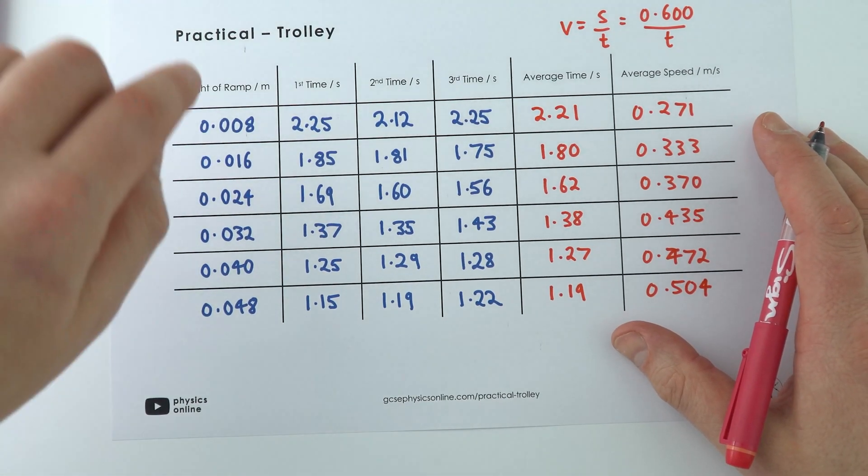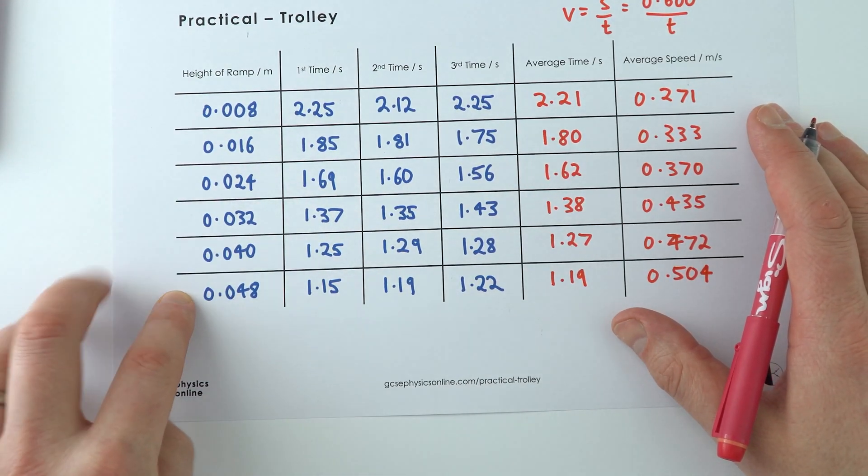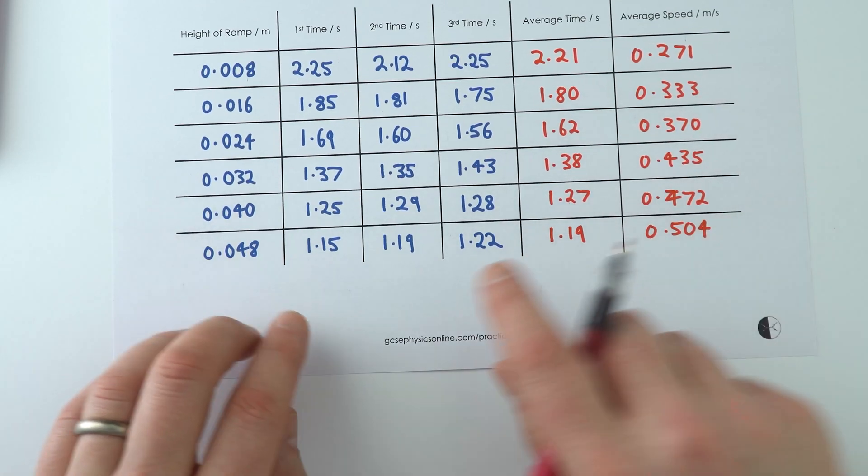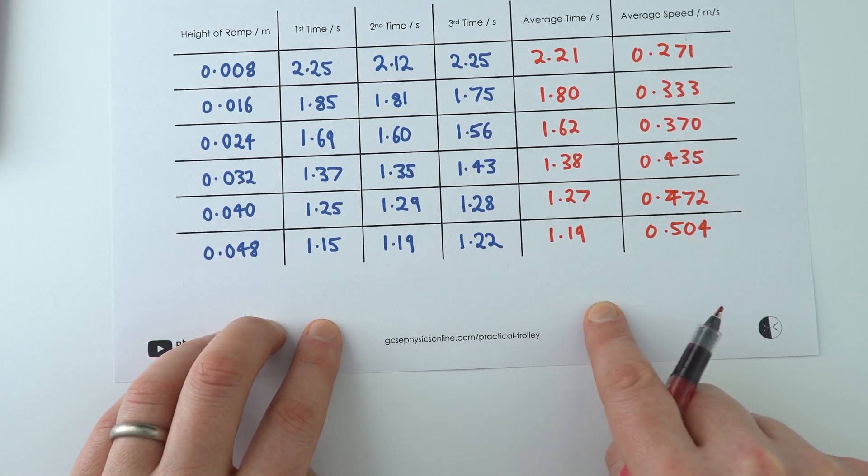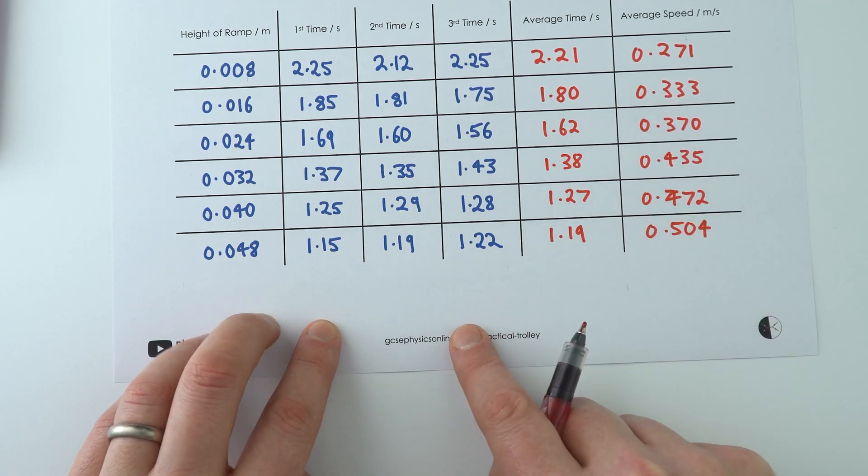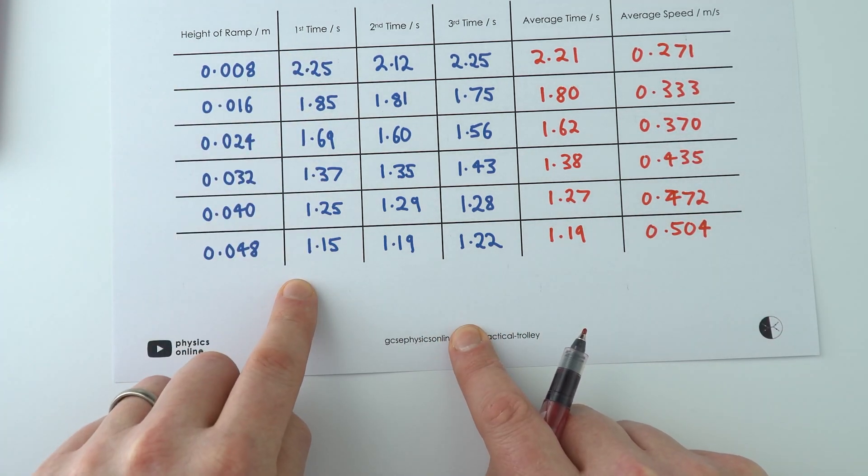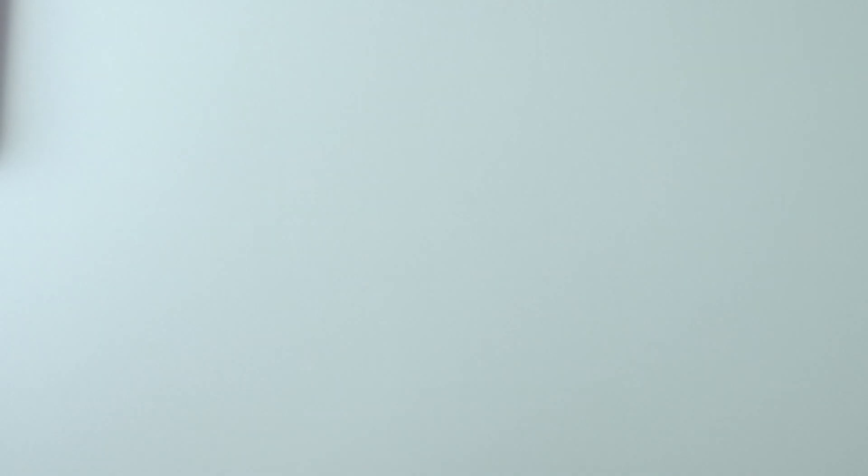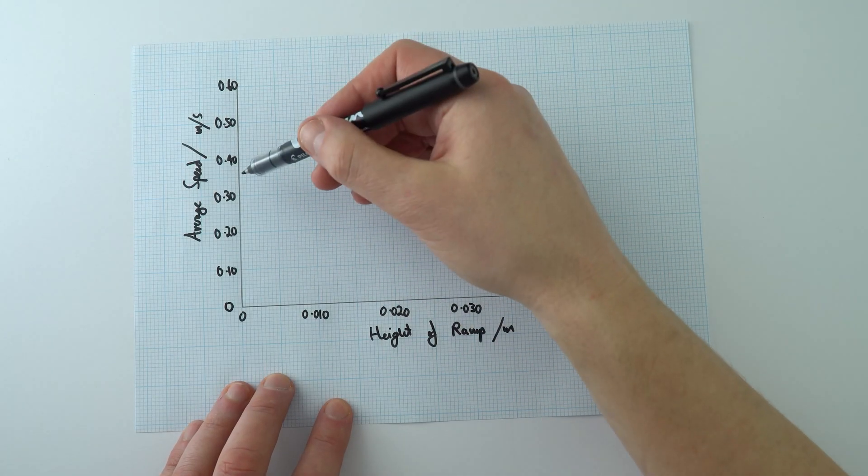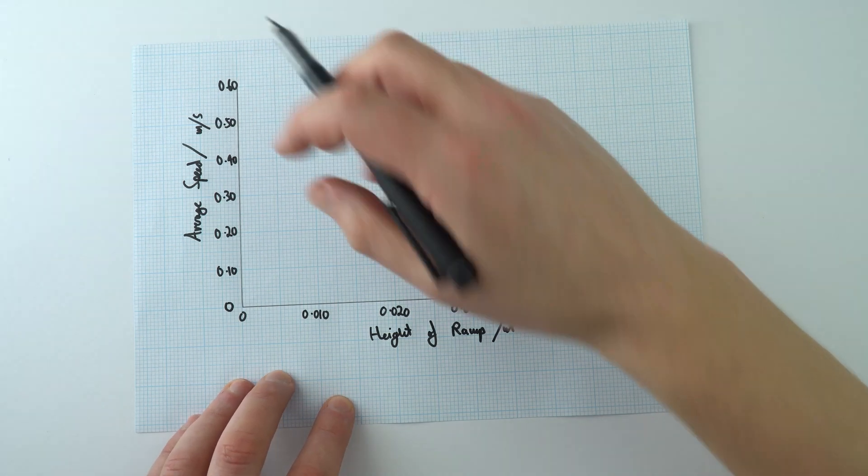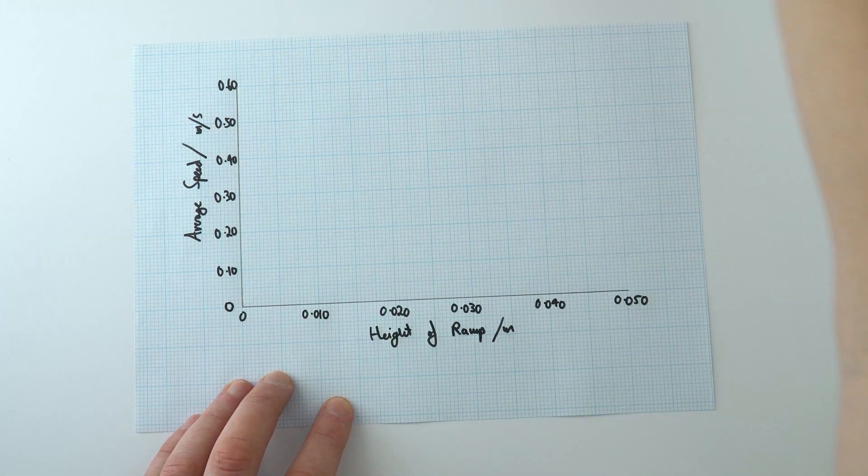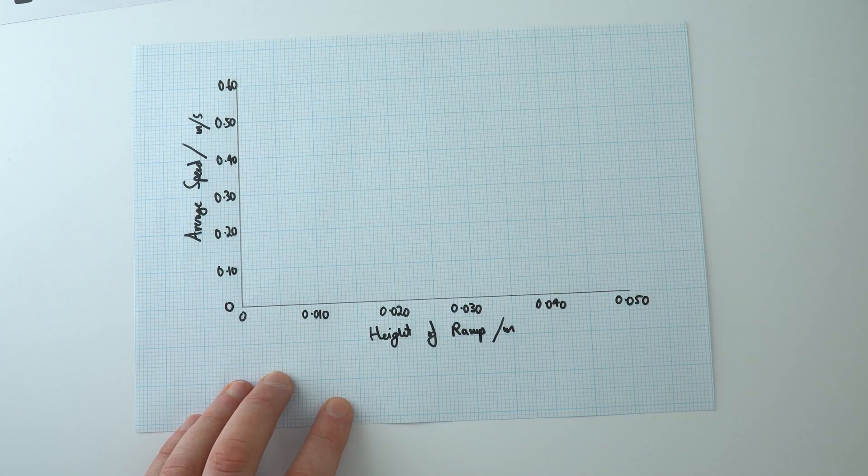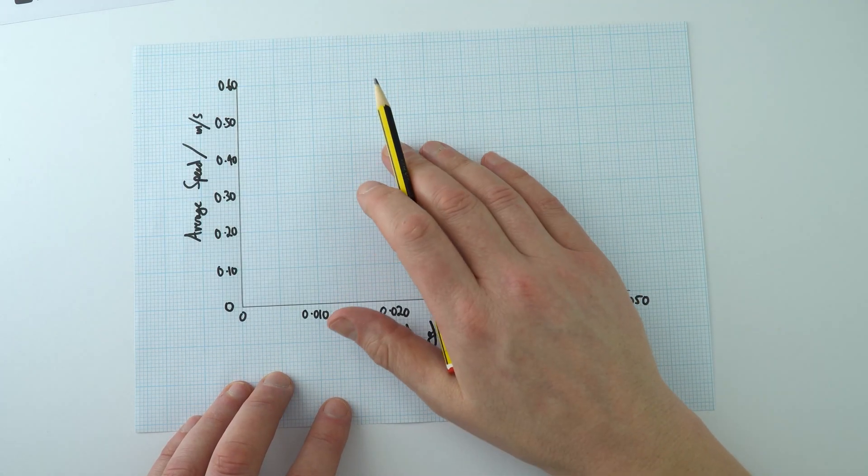Now we have some data: we've got our independent variable, the height of the ramp, and our dependent variable, the average speed. I'm going to plot this with the height of the ramp on the x-axis along the bottom and the average speed on the y-axis up the side. I've labelled my axes including the units, and what I can now do is actually take the data that we had over here and start plotting it in. I'm going to be using a pencil in case I make any mistakes.